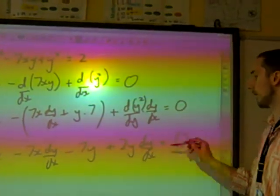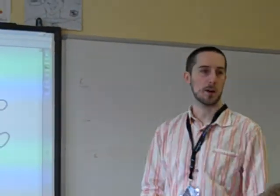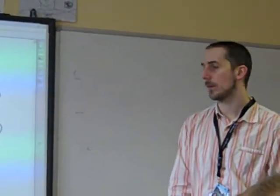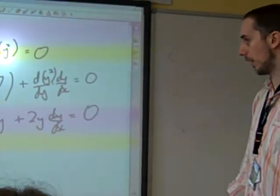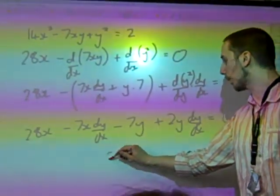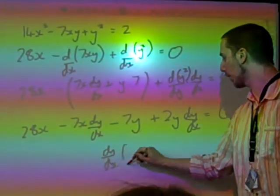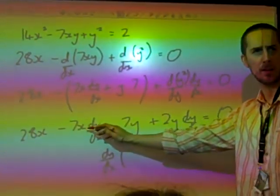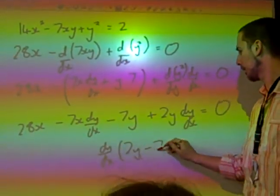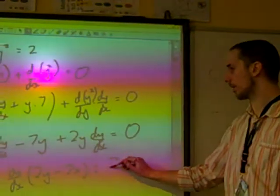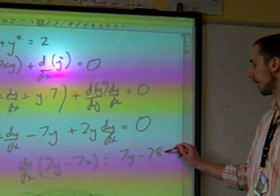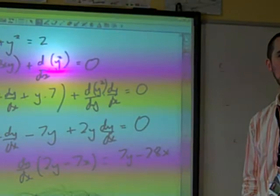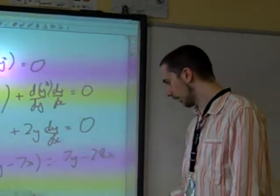And that was equal to zero. What do we have to do next? Get all the DYs together and all the other bits together. We've got dy/dx times (2Y minus 7X). And if we take the other bits to the other side, we've got 7Y minus 28X.